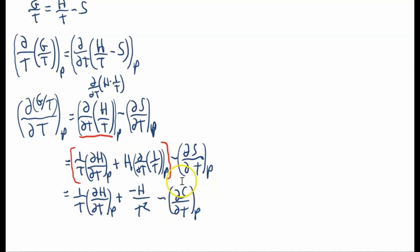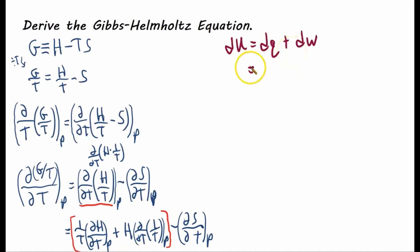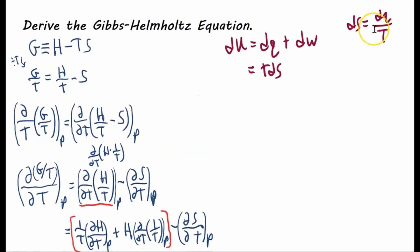Now we need to work on the entropy term because we want it in terms of a variable we can measure in the lab. To do that, we go back to the first law in differential form: dU equals dQ plus dW. We assume a reversible process, so dQ equals TdS — this is the thermodynamic definition of entropy for a reversible process. And if we assume pressure-volume work only, then dW equals negative PdV.